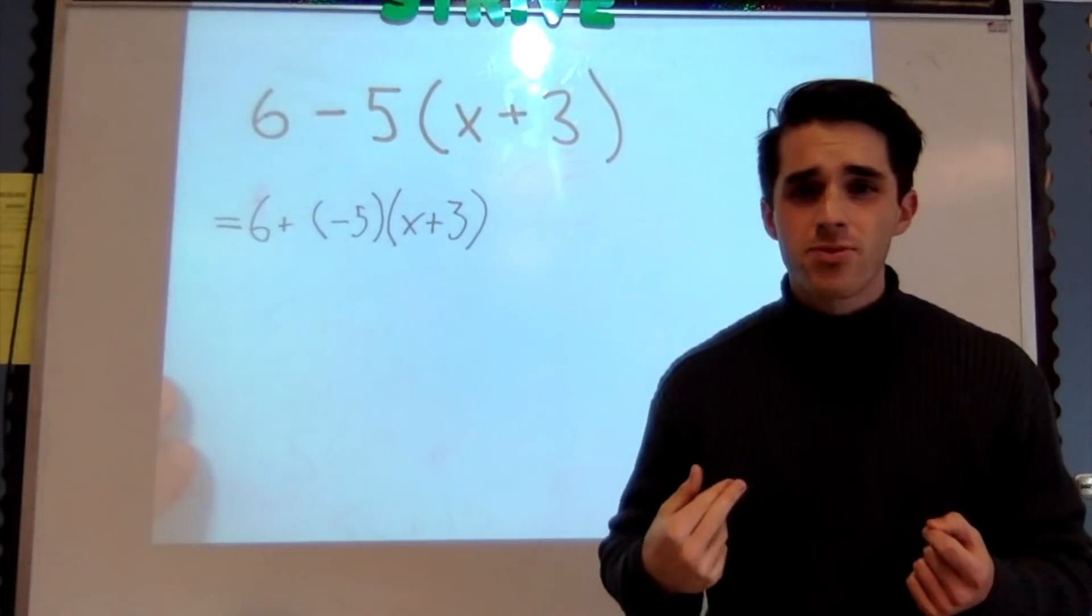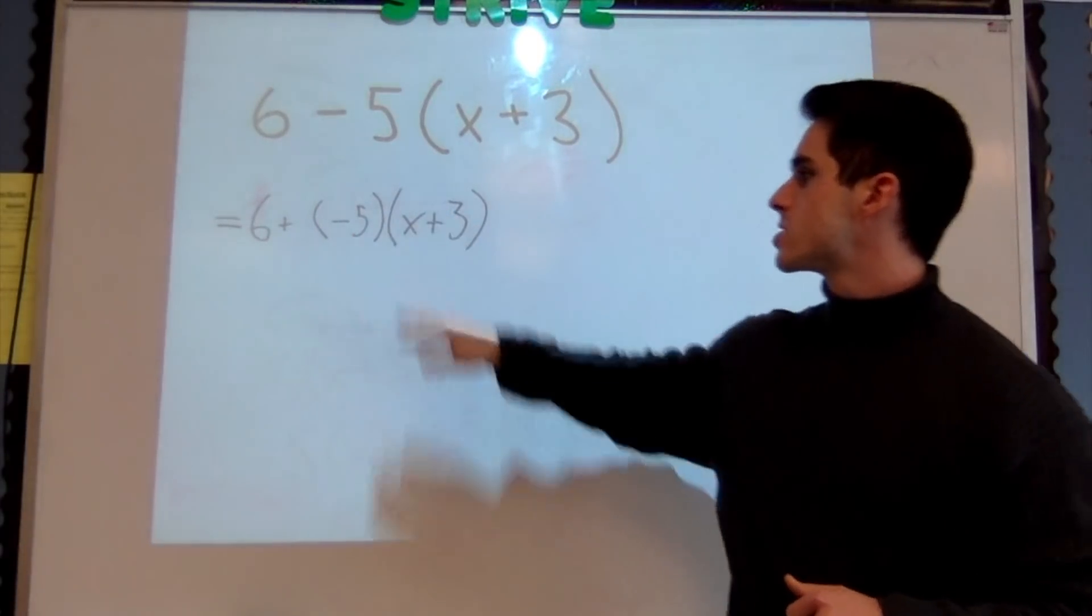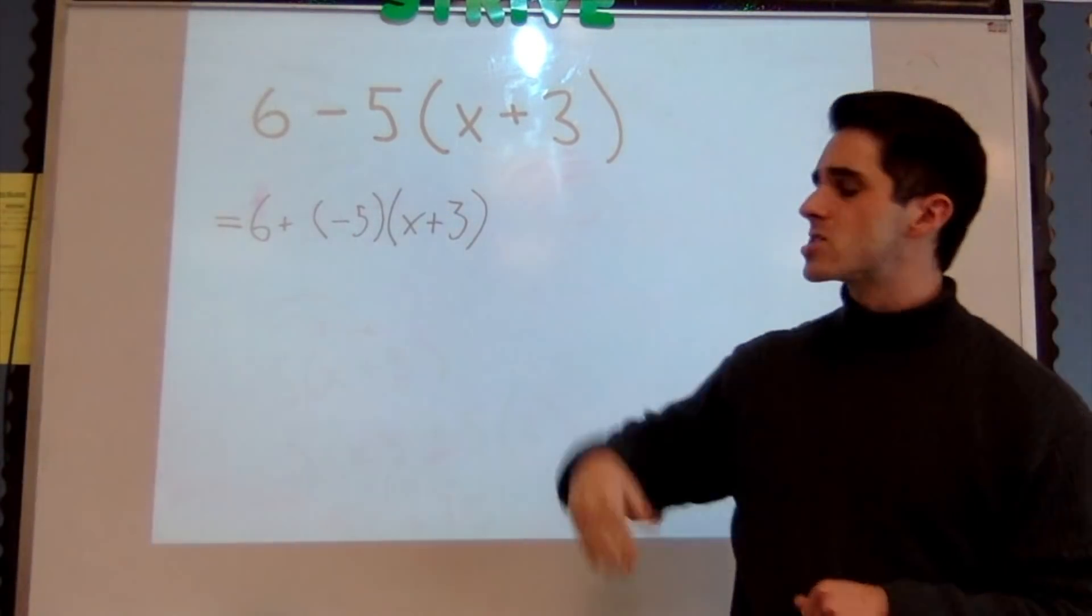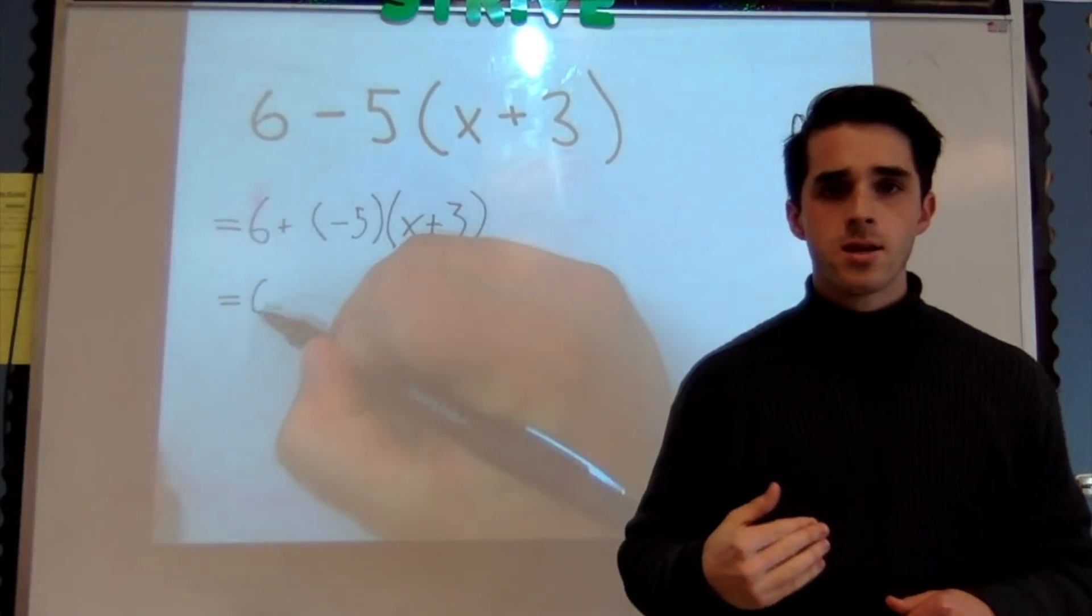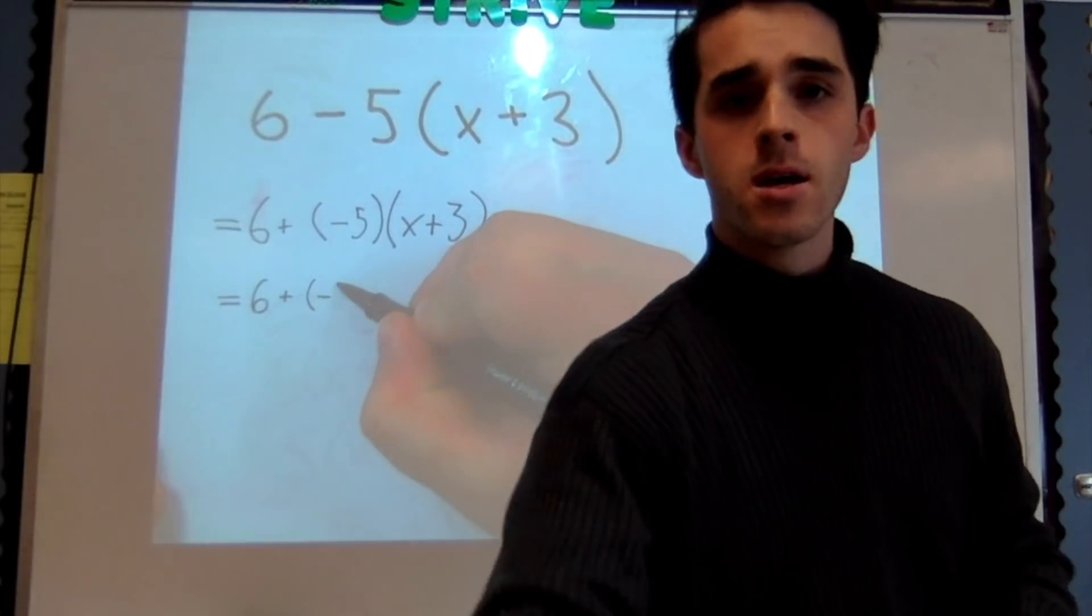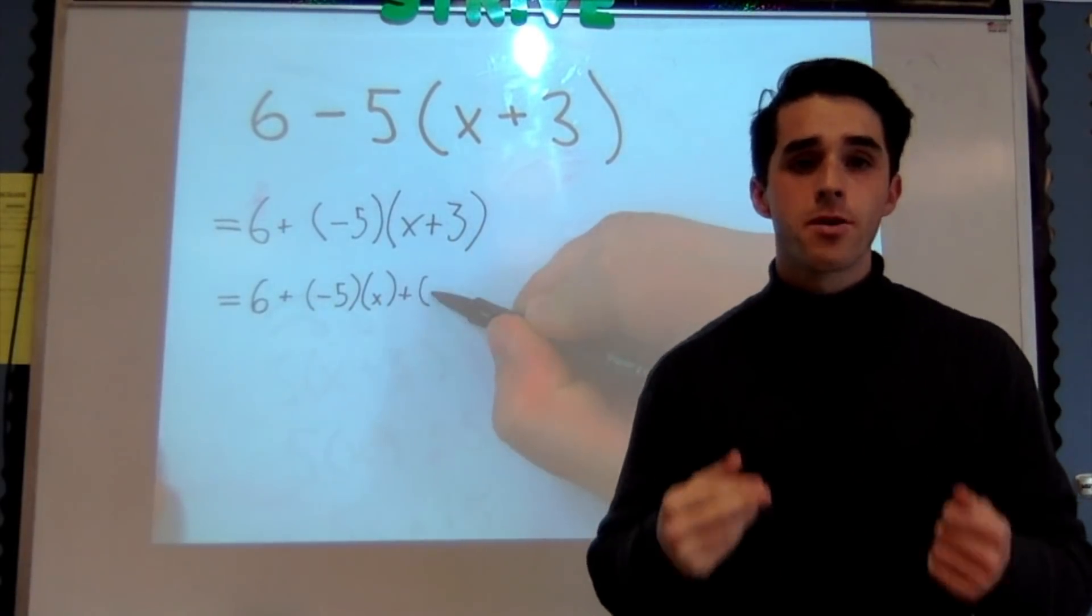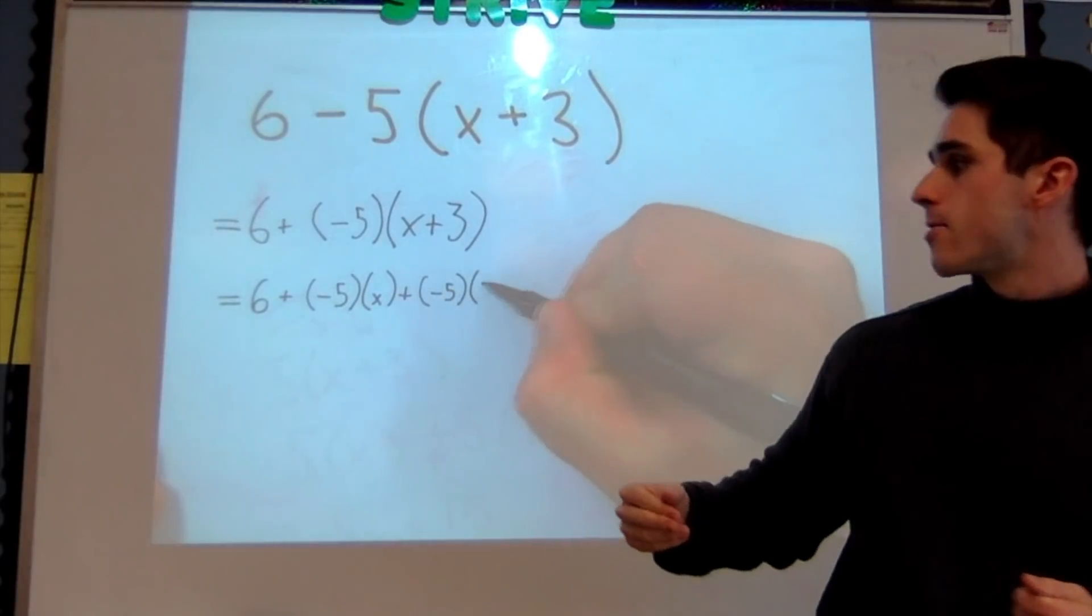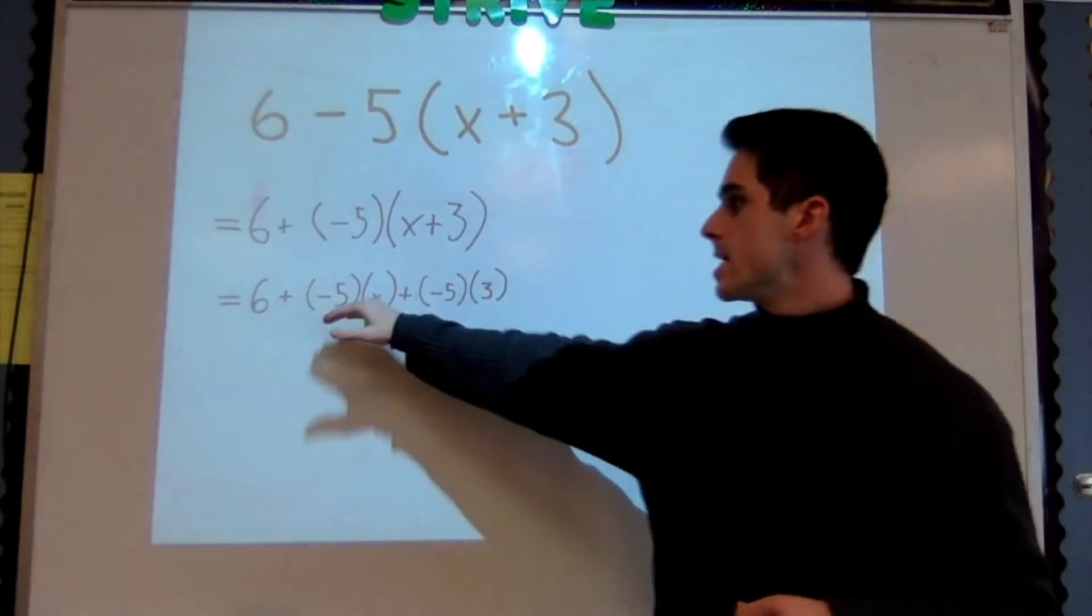Well we remember from the last problem that we just distribute the -5 over both these terms, over the x and the positive 3. So I'm going to rewrite this again. I'm going to write 6 + (-5)(x) + (-5)(3), notice how we have that written right here.